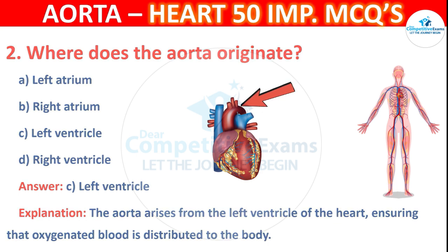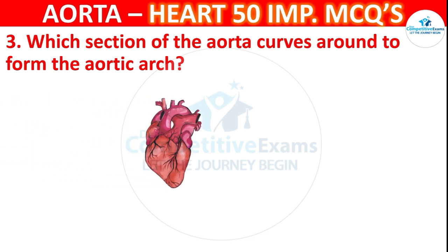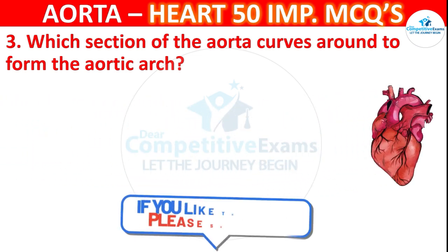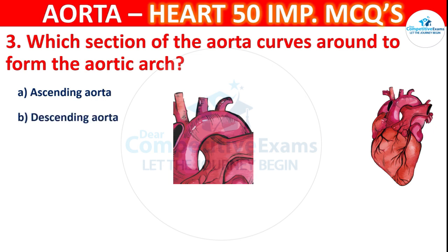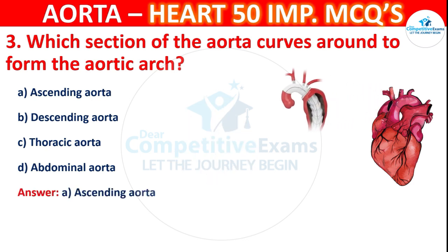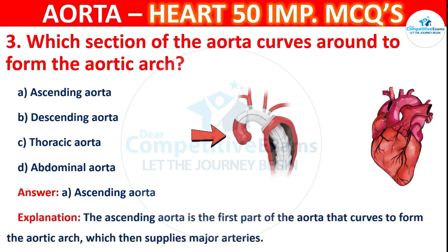Question number 3: Which section of the aorta curves to form the aortic arch? Options are ascending aorta, descending aorta, thoracic aorta, or abdominal aorta. The correct answer is A — ascending aorta. The ascending aorta is the first part of the aorta that curves to form the aortic arch, which then supplies major arteries.